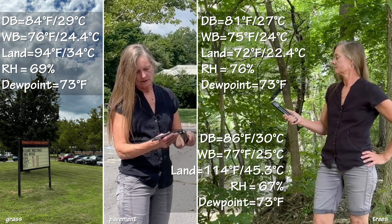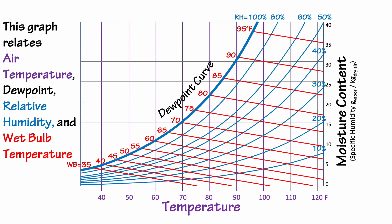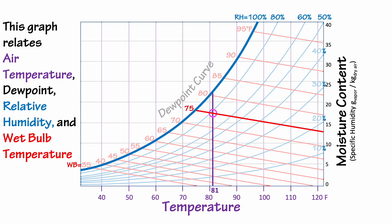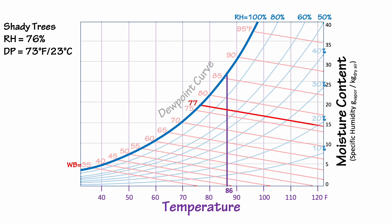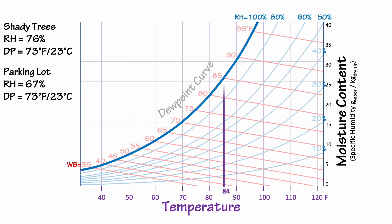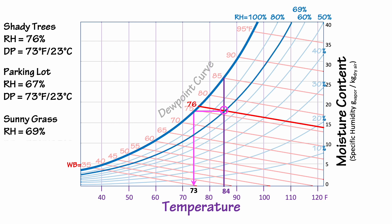Let's take our field measurements and see what they tell us. At the shady site, we had a dry bulb of 81°F and a wet bulb of 75°F, so our relative humidity is 76% and our dew point is 73°F. In the parking lot, the dry bulb is 86 and the wet bulb is 77, so the relative humidity is 67% and the dew point is 73°F. A third measurement was made at a sunny site on the grassy lawn in front of the school, where the dry bulb was 84 and the wet bulb was 76, so the relative humidity is 69% and the dew point is 73°F.